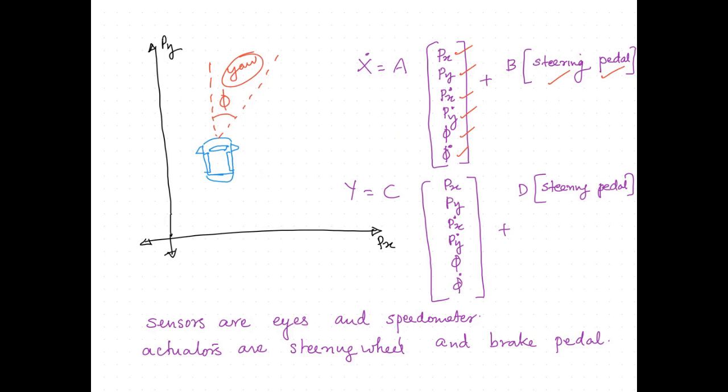We can use our eyes to identify the position and direction of the car, and look at the speedometer to get the velocity. Suppose that we close our eyes — this is equivalent to making C equal to 0. In that case, none of the states are available. Even then, the steering wheel and the pedal are available so that the states can be controlled; the system is still controllable according to the definition. However, the lack of observability has led us to a point where the states cannot be made to reach a safe destination.